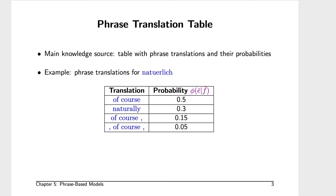The probabilities associated with the phrase translation table come from data and in practice are built upon word alignments learned from data. Here we see different translations of the German 'Natürlich': as of course, naturally, or of course comma. This brings up an interesting point: machine translation involving text usually includes punctuation marks as normal tokens. Punctuation marks are treated the same way as other words. This may seem odd, but in practice it tends to work quite well.